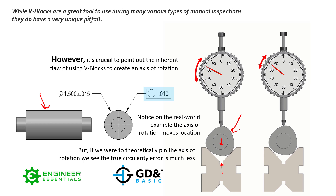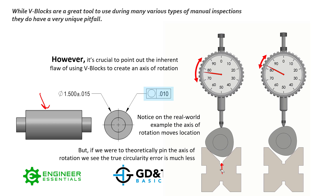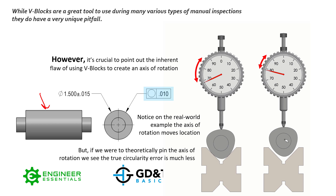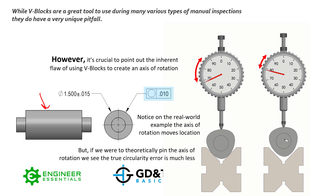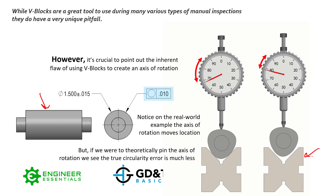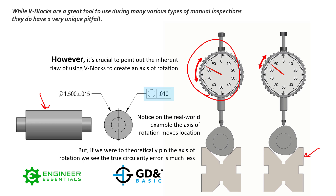This is a comically large amount of error in the example, but it does happen on your parts depending on how tight your tolerances are. When we measure circularity, we can't move that axis of rotation with respect to our indicator — that axis needs to be fixed. This is what polar probes and high-accuracy digital equipment do. But oftentimes we rely on v-blocks as a quick sanity check, and these are the pitfalls you need to be aware of.